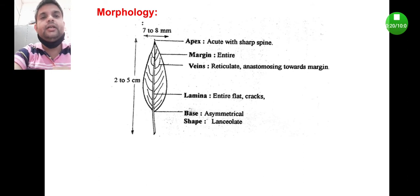The apex, the topmost part, is acute with sharp spine. At the topmost part, the presence of sharp spine can be observed. The margin is entire. The veins are reticulate, meaning you can see left and right, one by one, the attachment of veins.